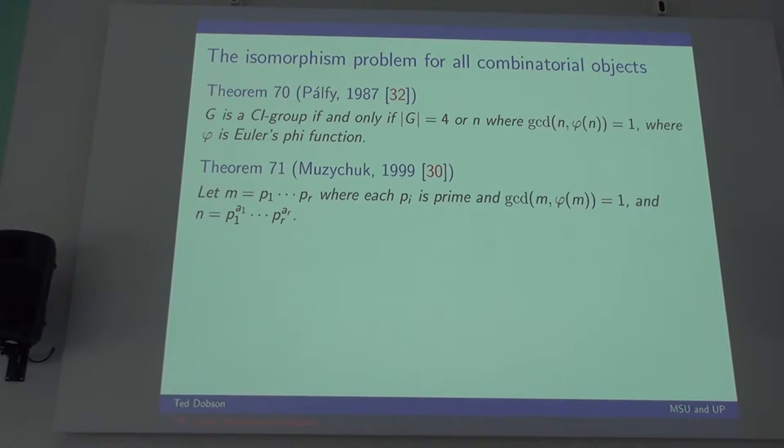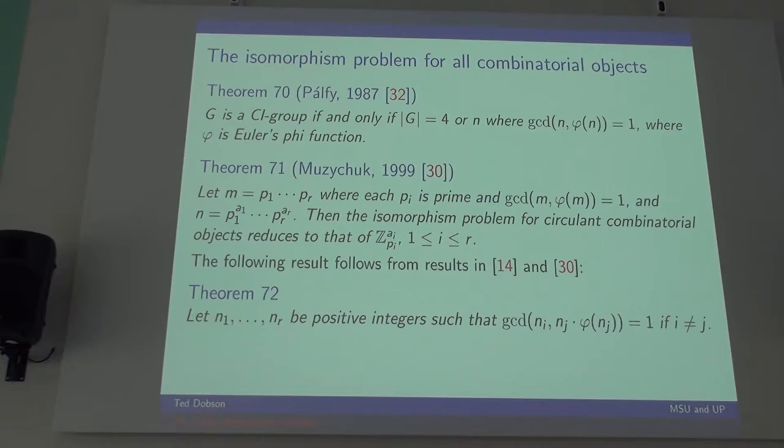Y'all know what's special about these numbers, GCD of n and phi of n equals 1. These are the groups for which, these are the values of n for which every group of order n is cyclic. And that's actually not a coincidence. You might think that's the whole story, but no, it isn't. Here's the result of Misha's that I like very much. So this is from 99. Let's take M is p1 through pr. Each of these pieces is prime, and the product of those primes has the nice GCD condition.